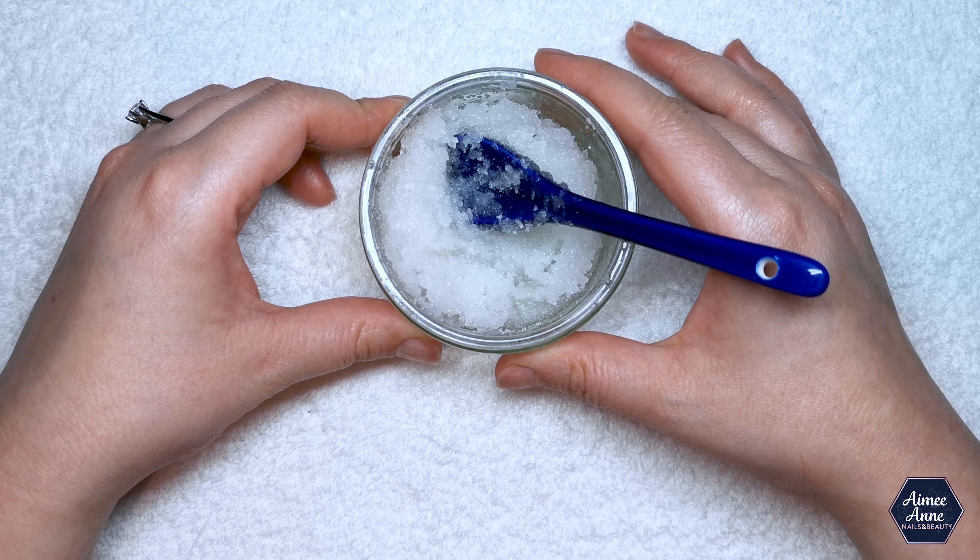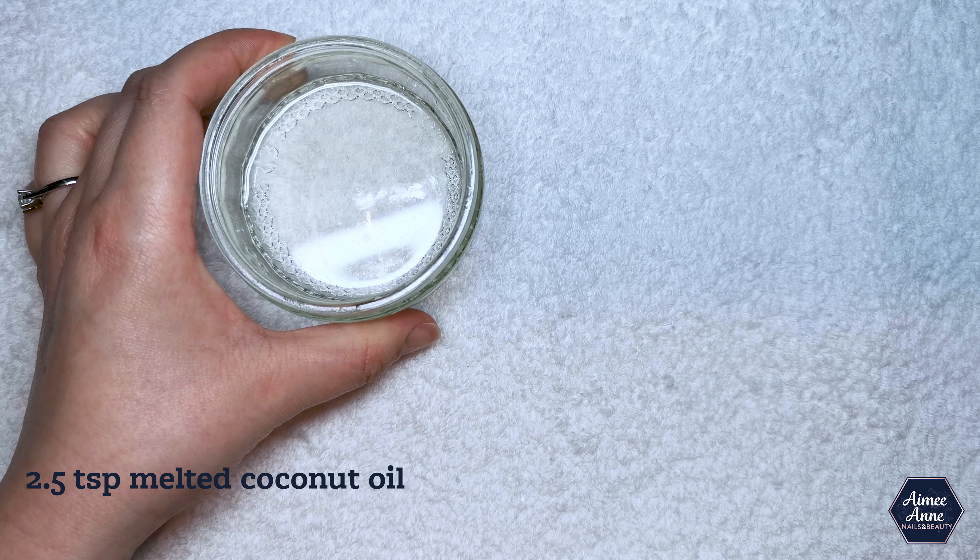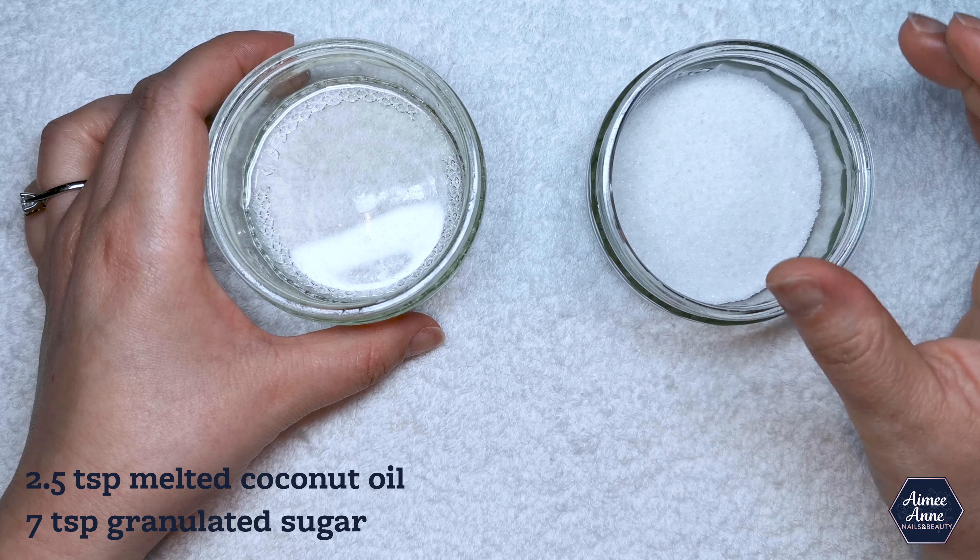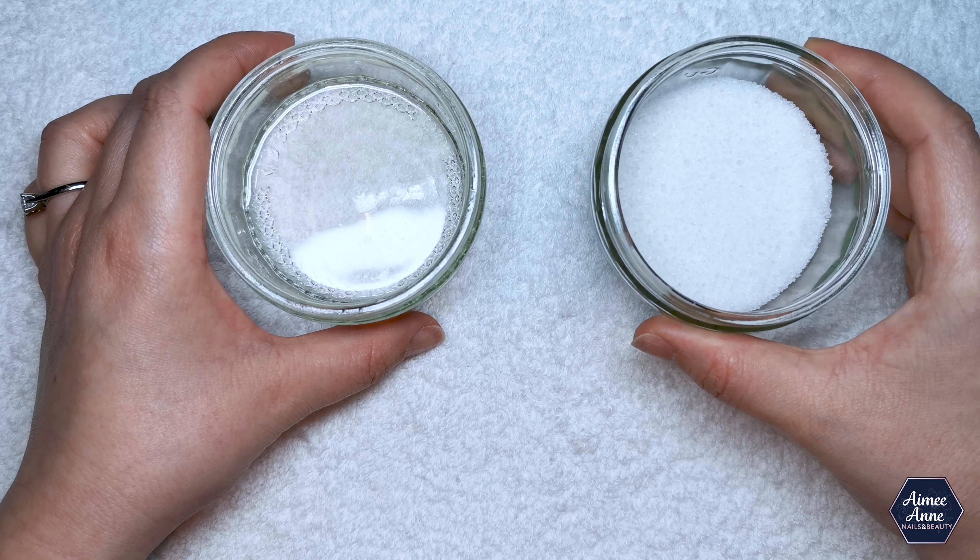Let me start by showing you how to make the scrub. I've got two and a half teaspoons of melted coconut oil and seven teaspoons of sugar. You can use any type of granulated sugar, whether it's brown or white, as long as it's got a nice grit to it.